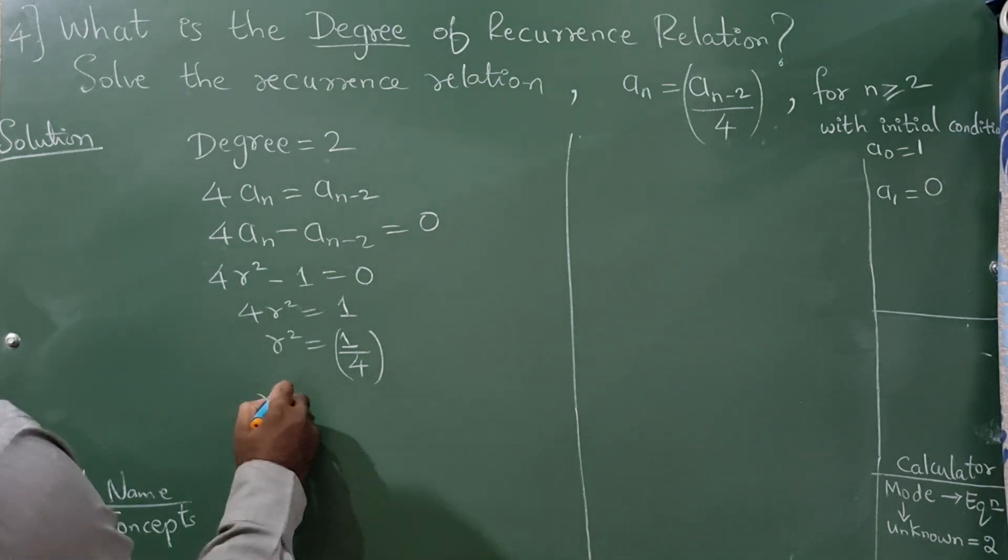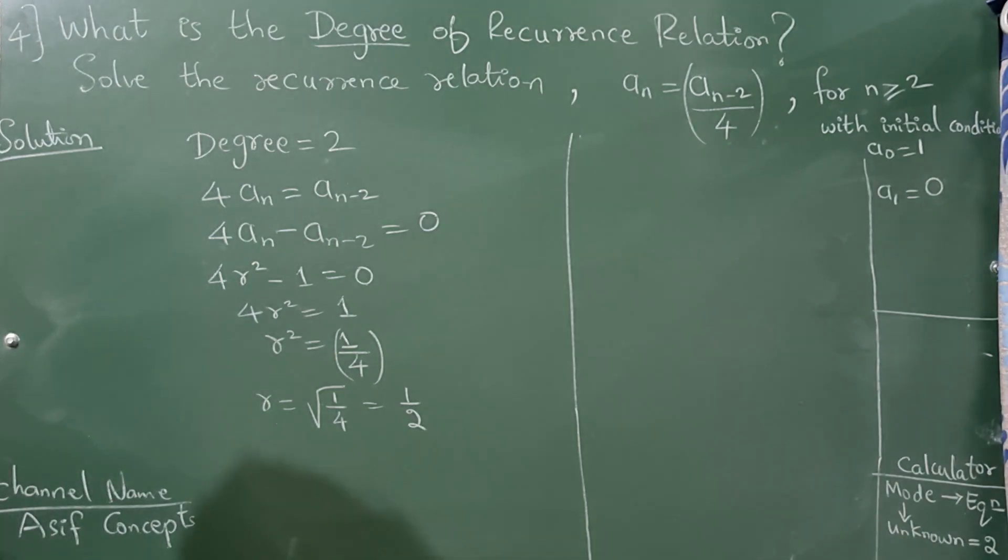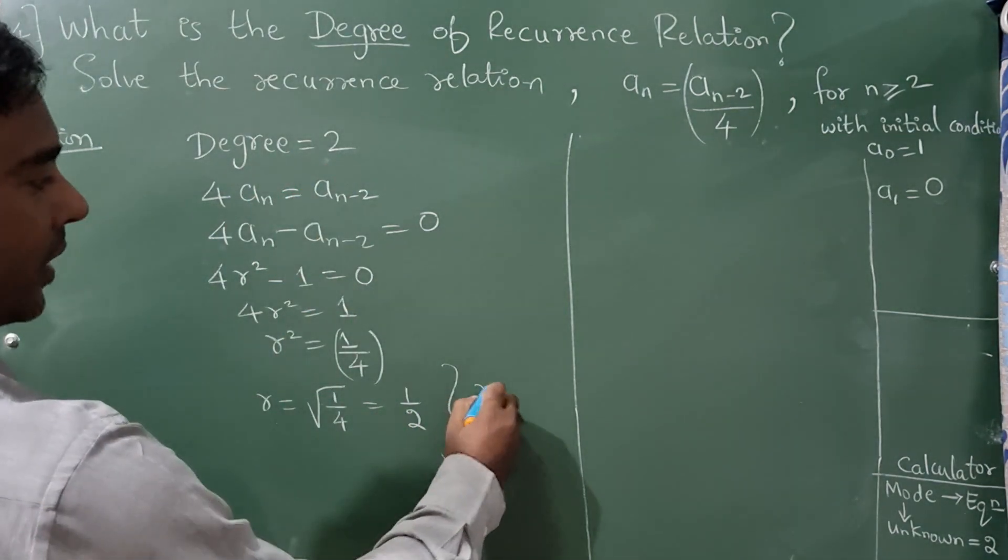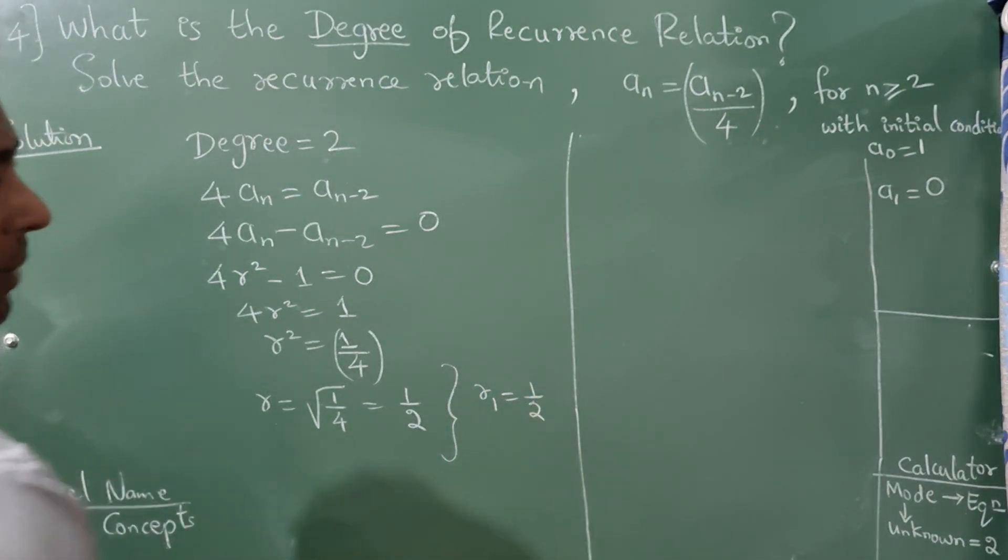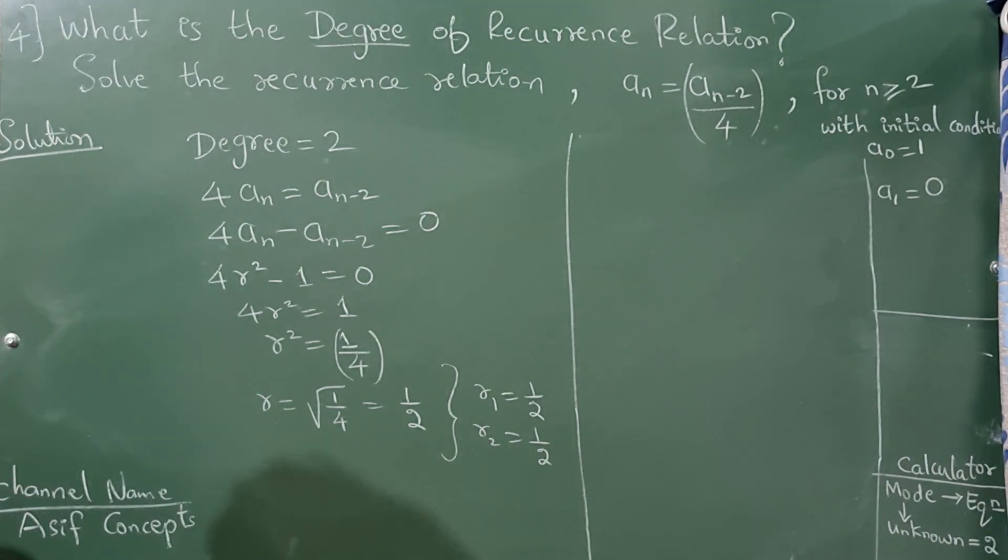Now r = √(1/4) = 1/2. Since the degree is 2, r_1 = 1/2 and r_2 = 1/2.